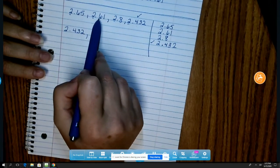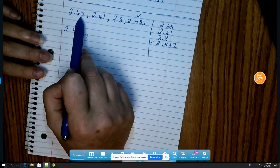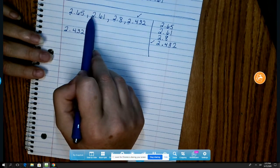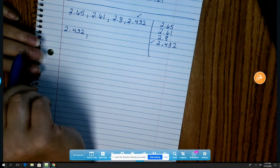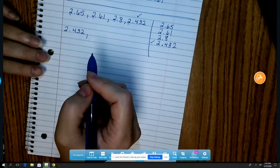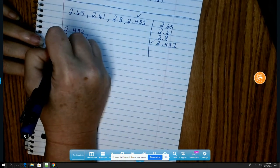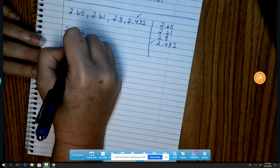The 6s are the same. So now I'm going to look at the hundredths place, which is 5 and 1. Well, 1 is certainly smaller than 5. So that tells me that 2 and 61 hundredths will come next.